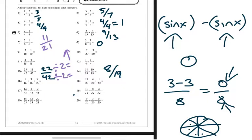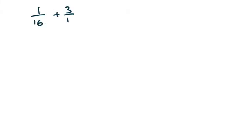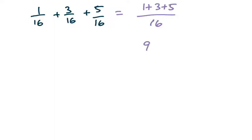Number fifteen: one-sixteenth plus three over sixteen plus five over sixteen. You're still going to add - this is nothing more than one plus three plus five over sixteen. One plus three is four, four plus five is nine, so nine over sixteen. Nine is three times three, sixteen is two to the fourth. We can't reduce that, so nine over sixteen is our answer.